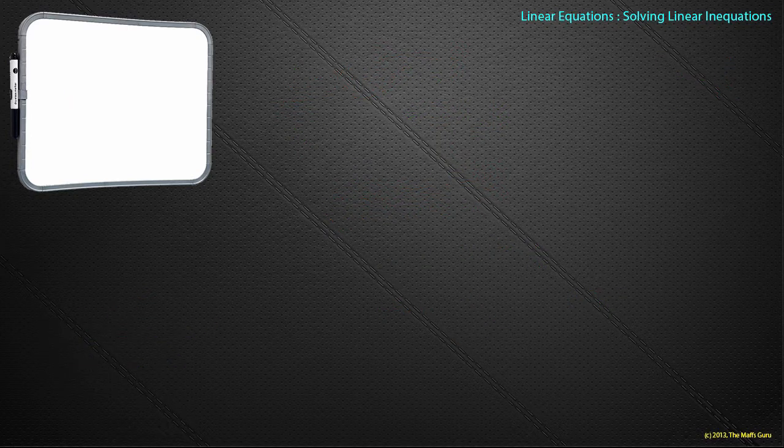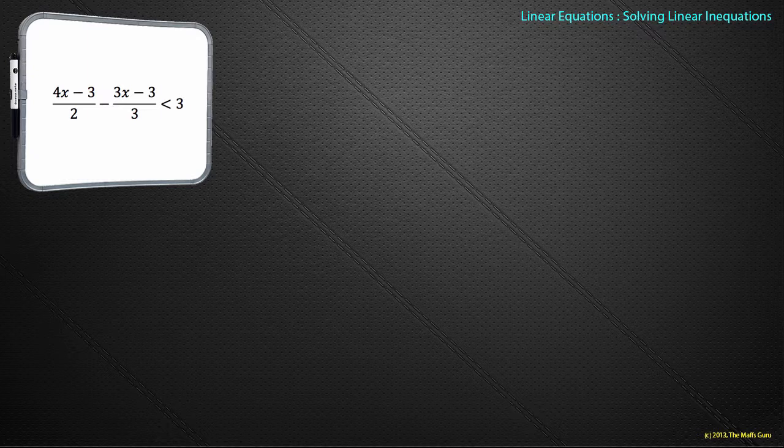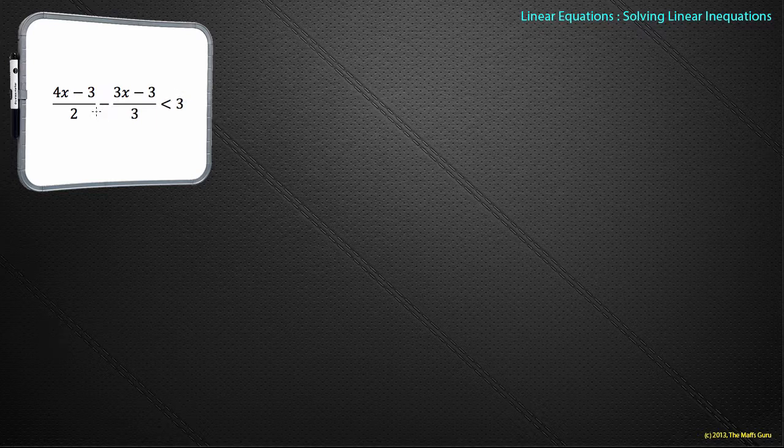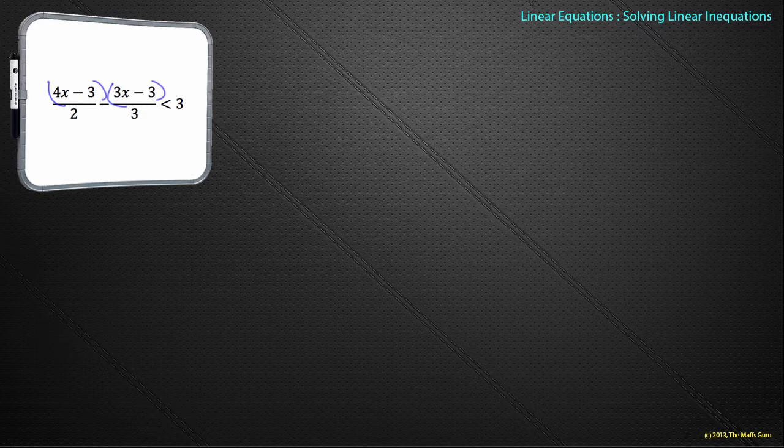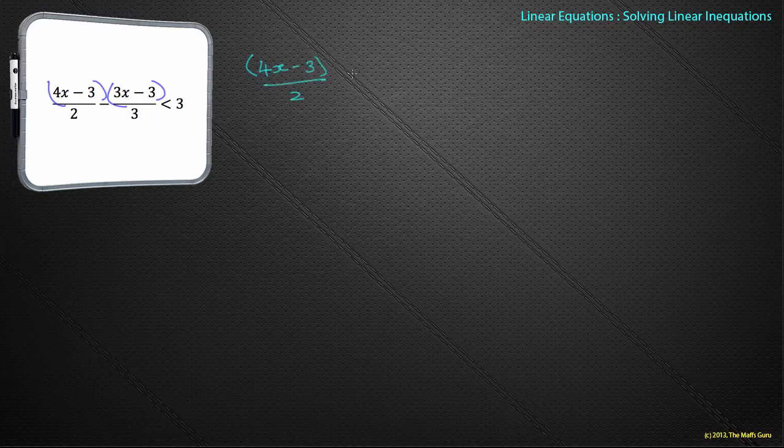And one last example. Yuck, fractions. But hold on, we're not bothered. We know about fractions. But one of the things we're going to do is go back to a previous video and just make sure we don't get confused. Remember, this minus sign here is critically important. Why? Because it can cause all sorts of issues with this part of my fraction. For completeness, what I should really be doing is putting these in brackets. So bracket 4x minus 3 over 2 minus bracket 3x minus 3 over 3 is less than 3.